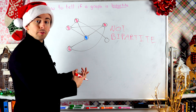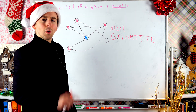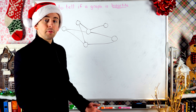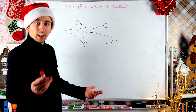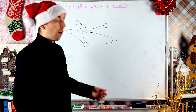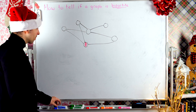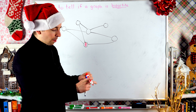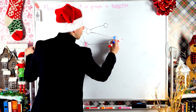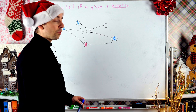A proper coloring is when all vertices are colored so that adjacent vertices have different colors. We can't do that here, so it's not bipartite. Let's do one more example. Here's a funny-looking graph. First thing I'll do is quickly scan it for odd cycles — specifically three-cycles. I don't see any, so I'll start coloring to see if it's bipartite. I'll pick an arbitrary vertex to start at — let's say this one here — and color it red.